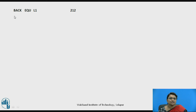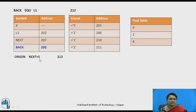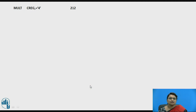The EQU statement assigns one label's address to another. L1's value is allocated to BACK, so BACK is now holding the address 202 in the symbol table. The ORIGIN statement again assigns a value to the location counter: NEXT plus 5. Since NEXT has value 207, plus 5 gives the new location counter value 212. No changes are made to any table.